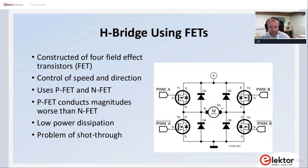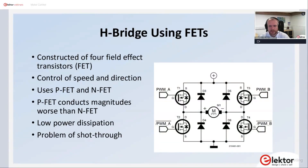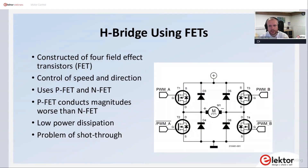Besides the power dissipation issue, you don't need to use bipolar transistors — you can also use field effect transistors, which have a fairly low resistance, so you will have lower power dissipation. You can use four of them to control speed and direction. This configuration uses P-channel and N-channel FETs. The resistance of a P-channel FET is magnitudes worse than that of an N-channel FET, so where an N-channel FET might be 0.01 ohms, a P-channel FET will be around 0.1 ohms.